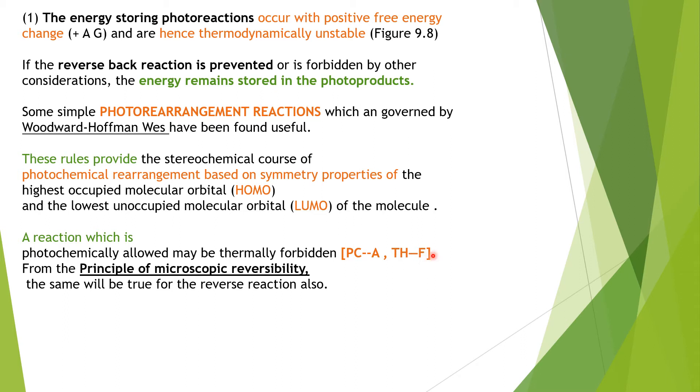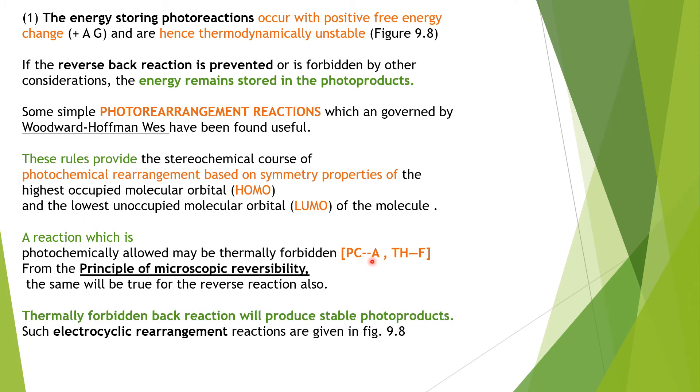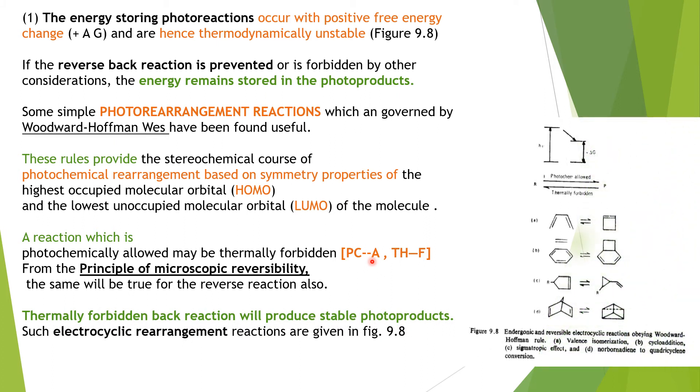These rules provide the stereochemical course of photochemical rearrangement based on the symmetry properties of highest occupied molecular orbital and lowest unoccupied molecular orbital. Reactions which are photochemically allowed may be thermally forbidden. Also, the principle can be reversed: if the reaction is thermally allowed, it can be photochemically forbidden. For example, electrocyclic rearrangement reactions.